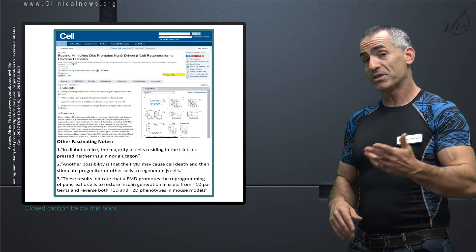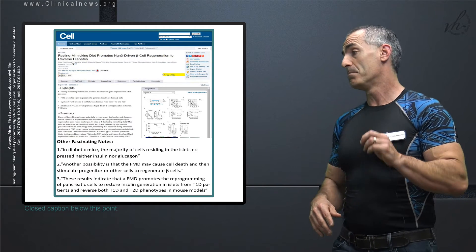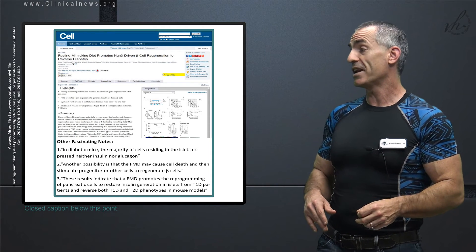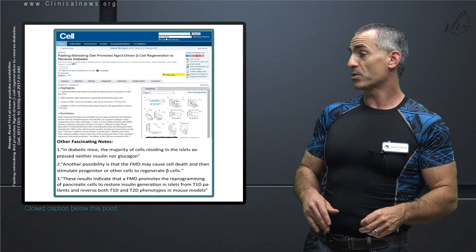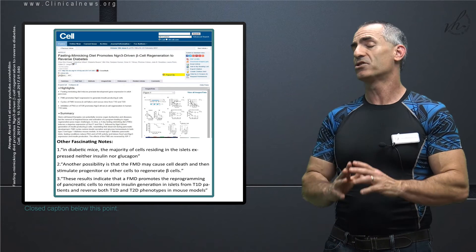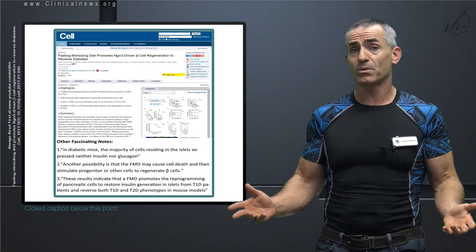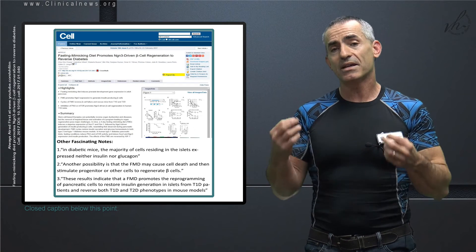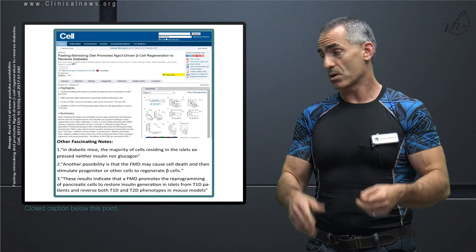Another possibility is that the fasting mimicking diet may cause cell death and then stimulate progenitor cells to regenerate beta cells. In conclusion, there's so much information. I'd love to be able to go on further in regard to timing, food types, and so on, but the main thing is to get the gist of the research and then explore on your own.